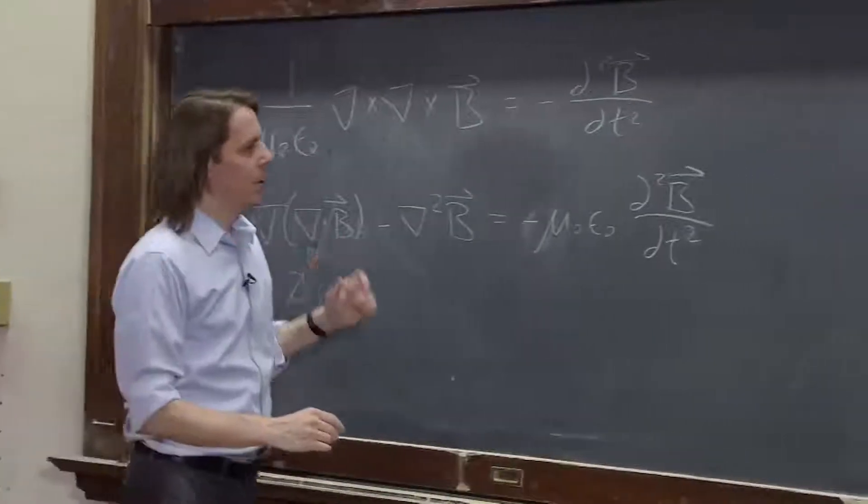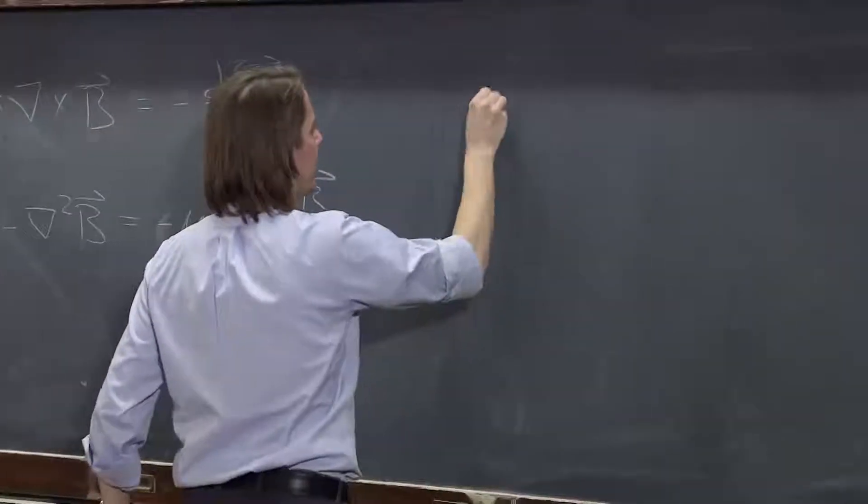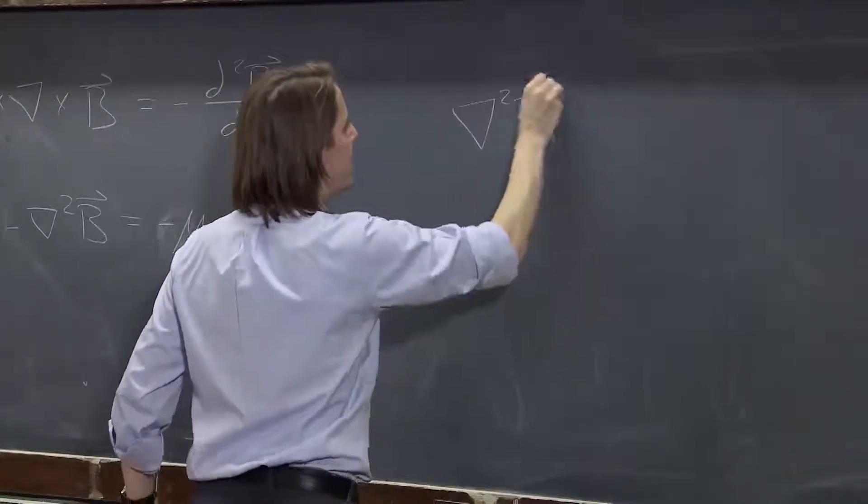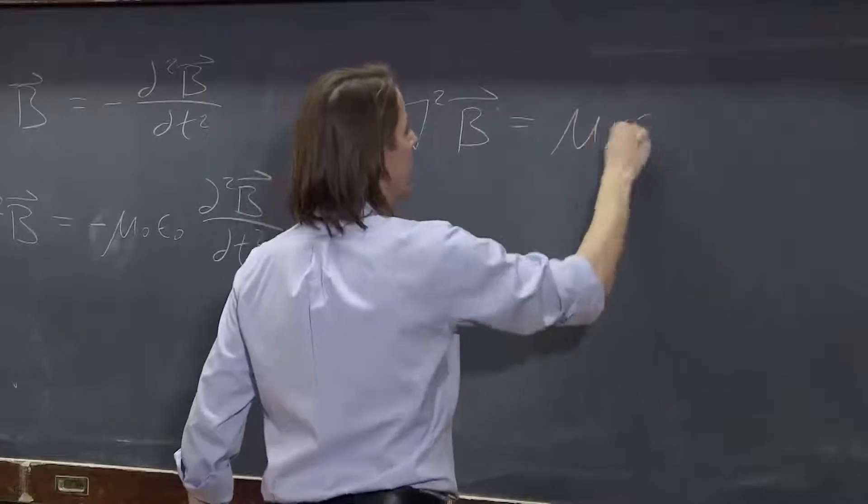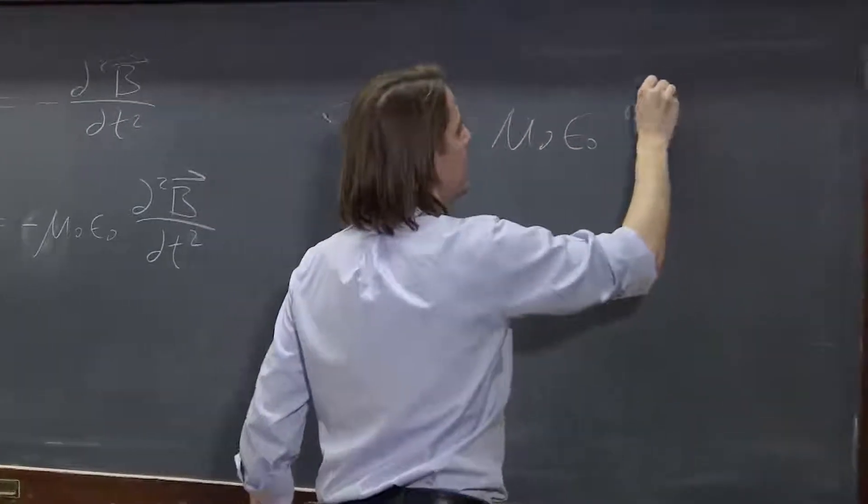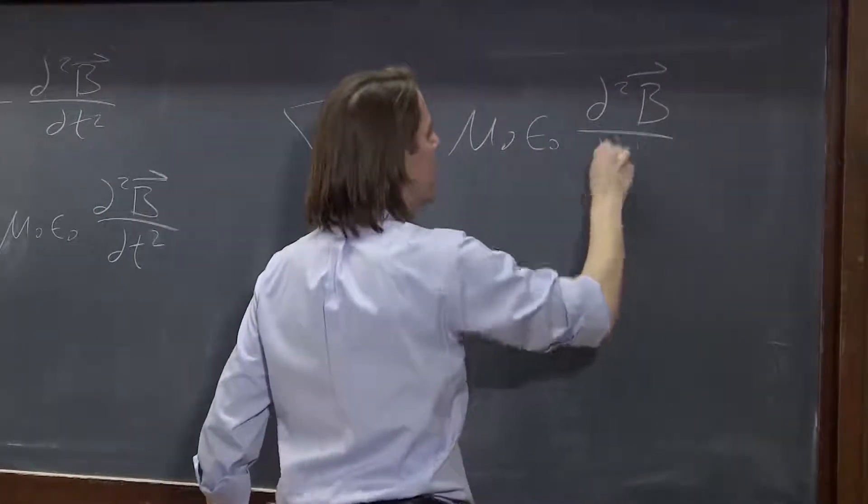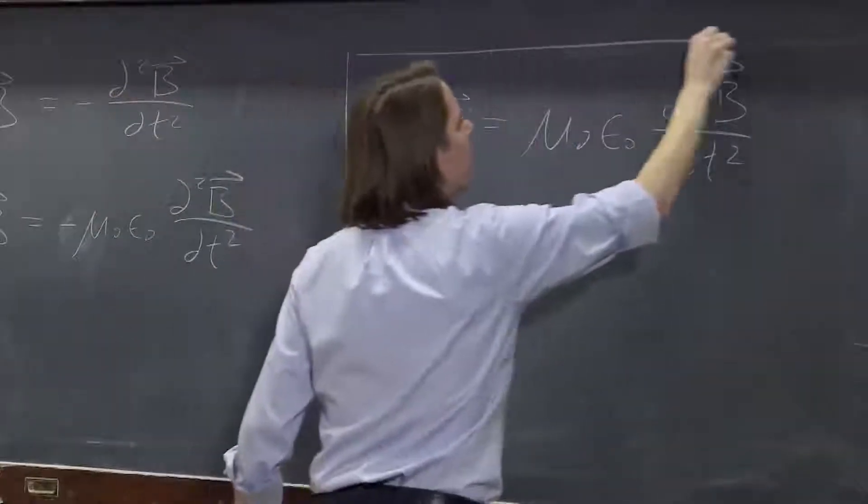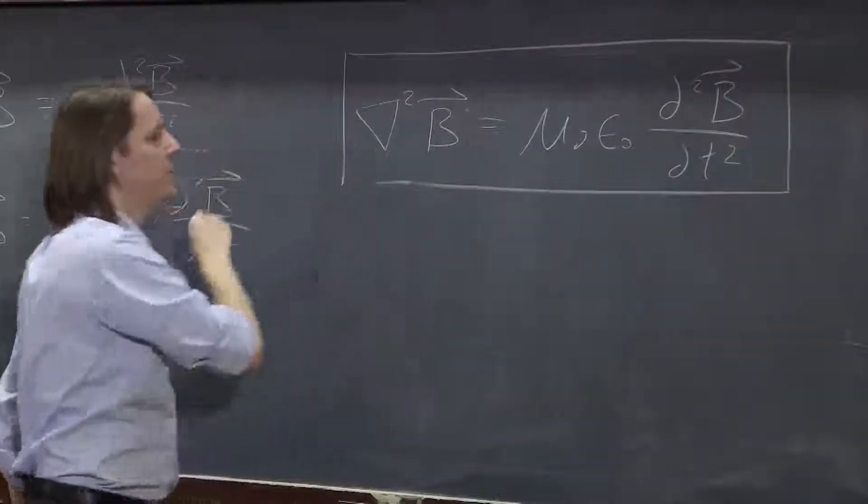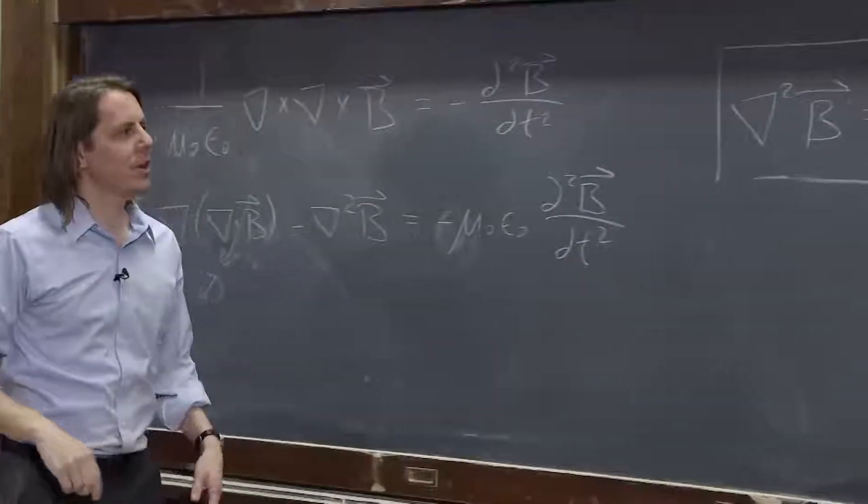So we're left with what ends up being the wave equation we're looking for: del squared B, the vector Laplacian of B, which is not a real thing, mu naught epsilon naught d2B dt2. And so Maxwell was playing around with his equations and he derived what he recognized as a wave equation.